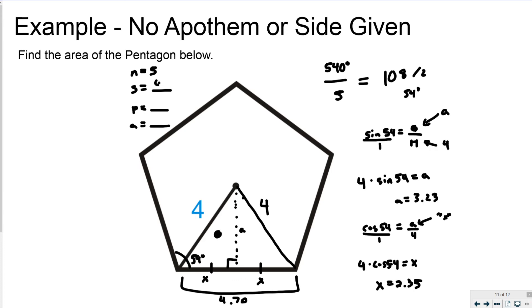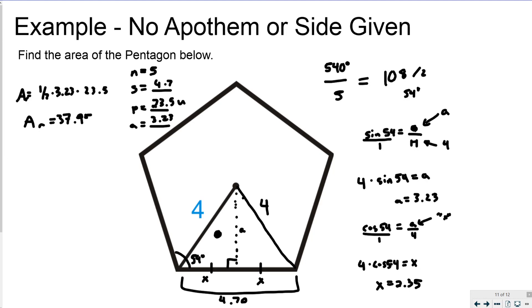Knowing the side is 4.7, the perimeter is 5 times 4.7, which is 23.5 units. The apothem is 3.23. Using the area formula — one half times the apothem times the perimeter — gives one half times 3.23 times 23.5, and the area rounded is approximately 37.95 units squared. That's a pretty complicated example.